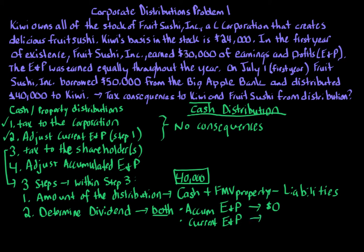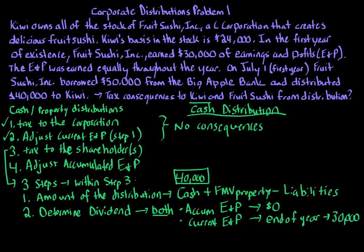The current E&P is $30,000, as stated in the problem. You might note the distribution occurs on July 1st and wonder whether we take only half of the $30,000 since E&P was earned equally. However, Section 316 states that we look at E&P at the end of the year — not rateably at the time of distribution. We also take into account all distributions for the full year, which is $40,000. Since taxes are done when the year closes, you look at everything in total for the year.